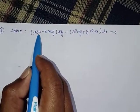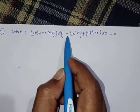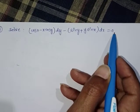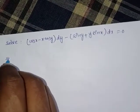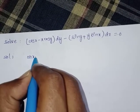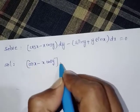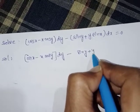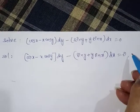Solve: (cos x - x cos y) dy - (sin y + y sin x) dx = 0. First, write down the given differential equation: (cos x - x cos y) dy - (sin y + y sin x) dx = 0.